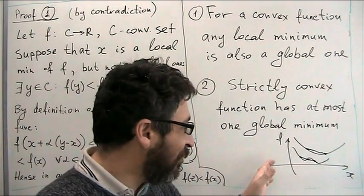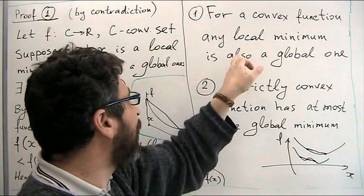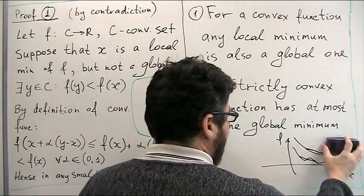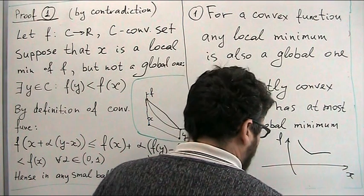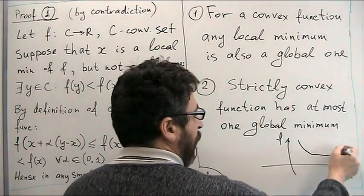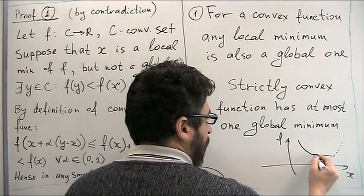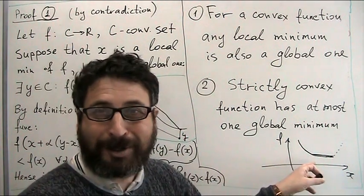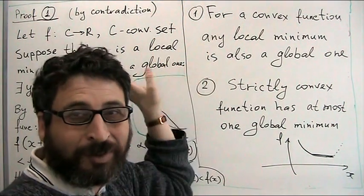We can show this formally. This is our first claim: for a convex function, any local minimum is also a global one. I say 'any local' because a convex function may have a flat minimum — for example, a constant segment that then increases on the right-hand side. All those flat points are minima, and each of them is a global one. There are many local minima and each of them is a global one.